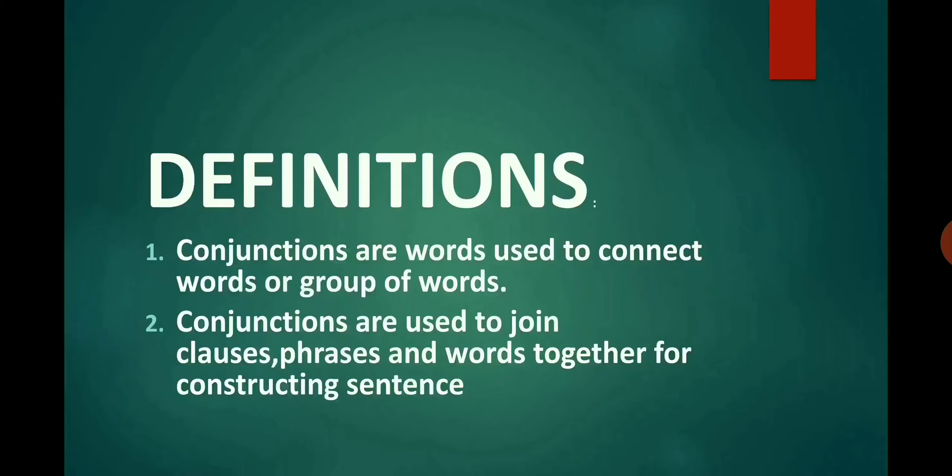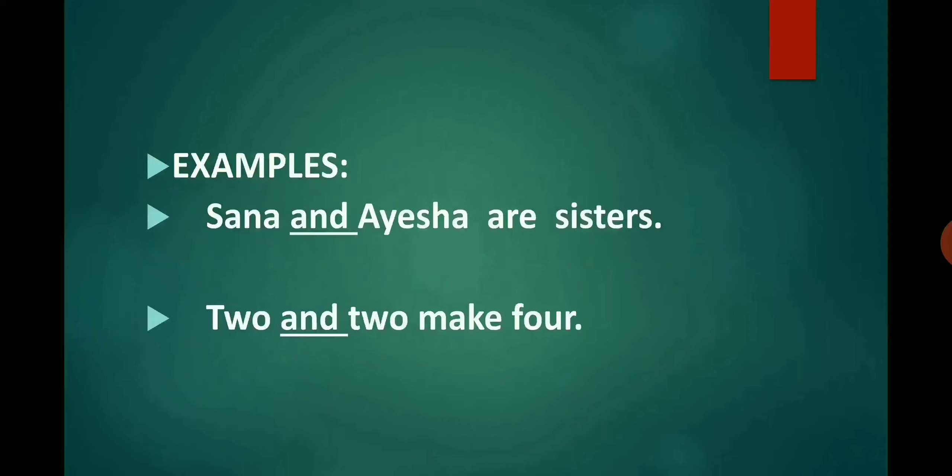Let me give you some examples. The first sentence is: Sana and Aisha are sisters. Here, 'and' is a connector between two words — Sana and Aisha — joining them together. The next sentence is: 2 and 2 makes 4. In this sentence, 'and' is connecting the words 2 and 2.